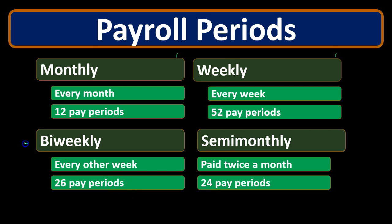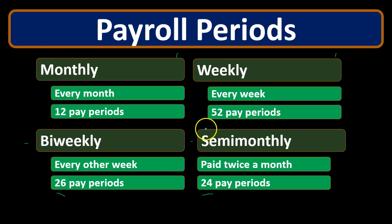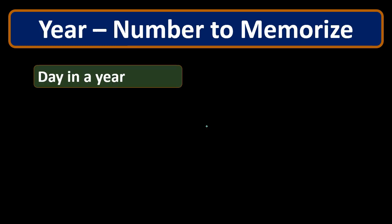This is where the problem usually lies: are we doing biweekly or semi-monthly? They're not the same. I would use monthly and weekly as the anchor numbers to derive the other two. Semi-monthly is monthly times 2 — so 24. Biweekly is 52 weeks divided by 2 — so 26.